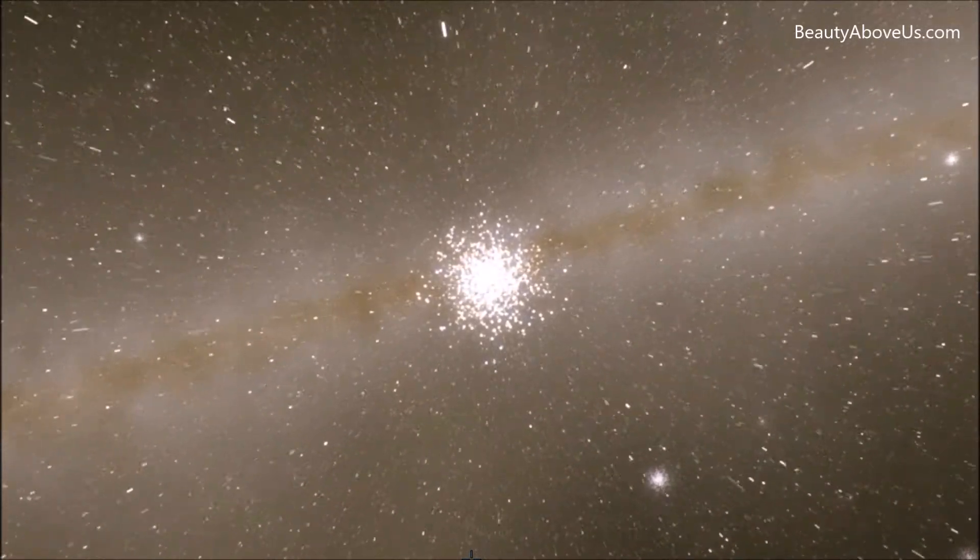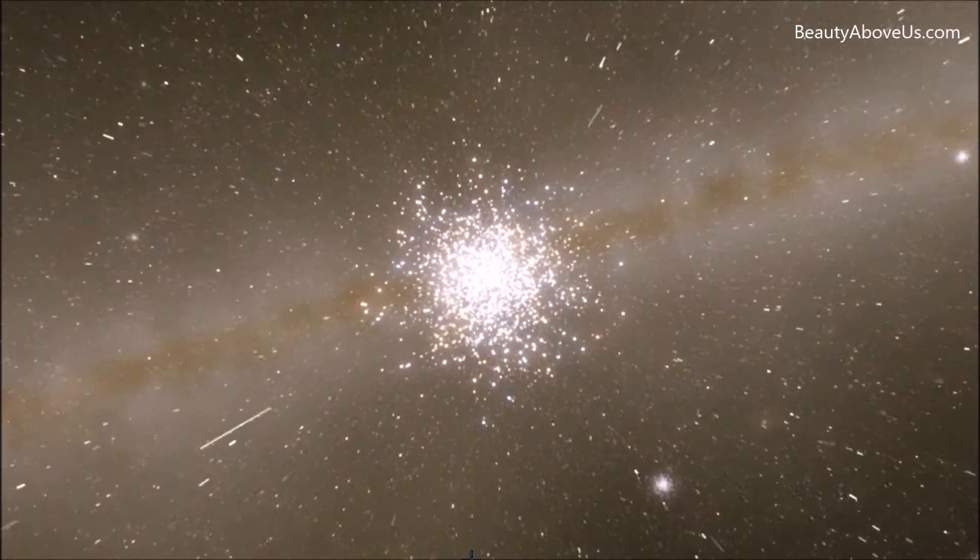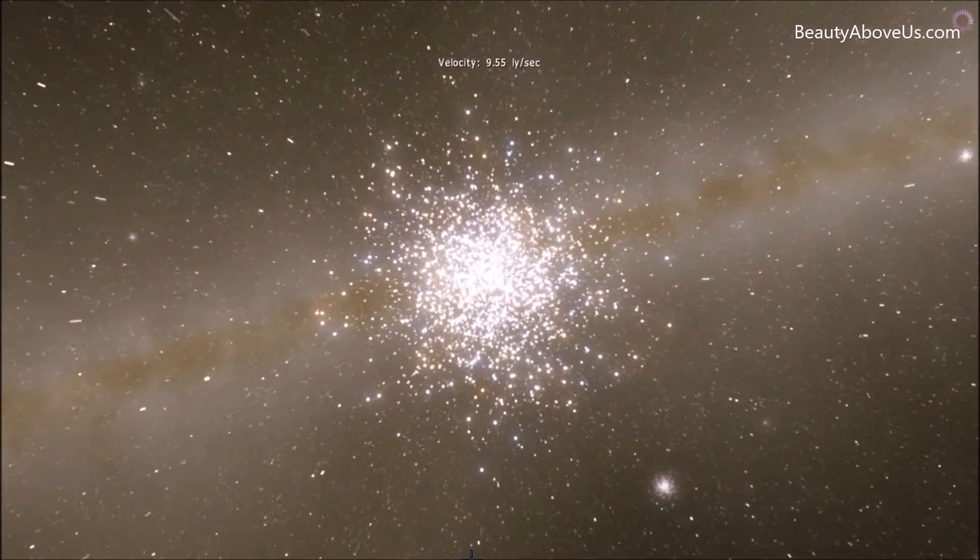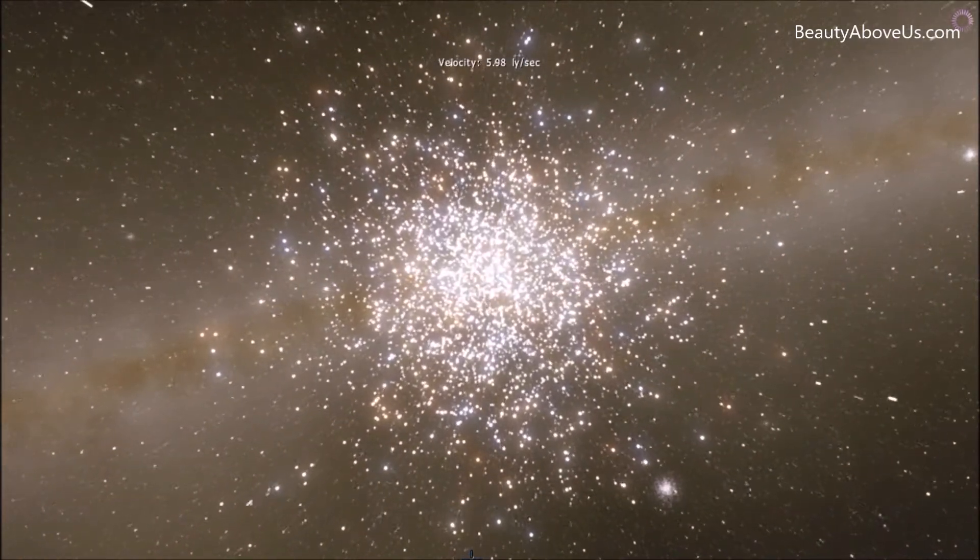Astronomers haven't actually seen the supermassive black hole itself. Instead, they have observed the motion of stars in the vicinity of Sagittarius A star.